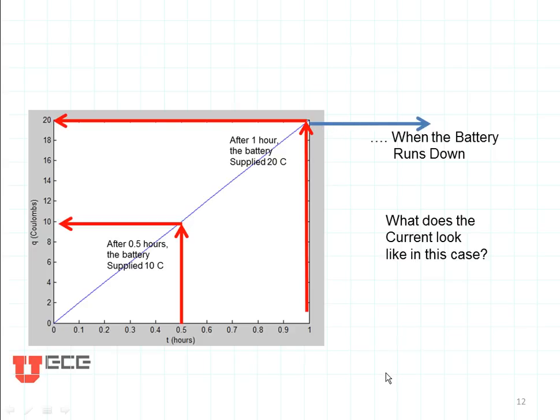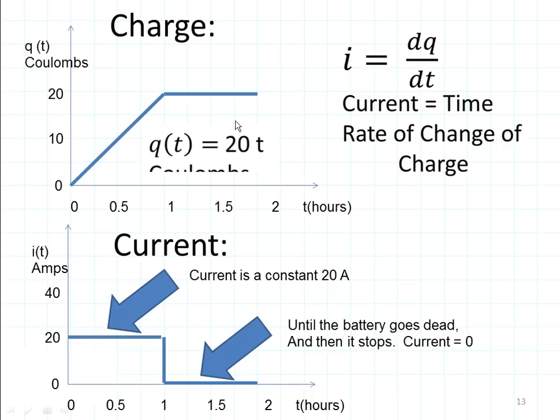And what does the current look like in this case? So let's look at it this way. Here's our charge, and we ran from zero to 20 coulombs, and then it stopped because the battery was dead. Well, the current is going to be the time rate of change of the charge. So it's the time derivative. The time derivative is the slope of this line.